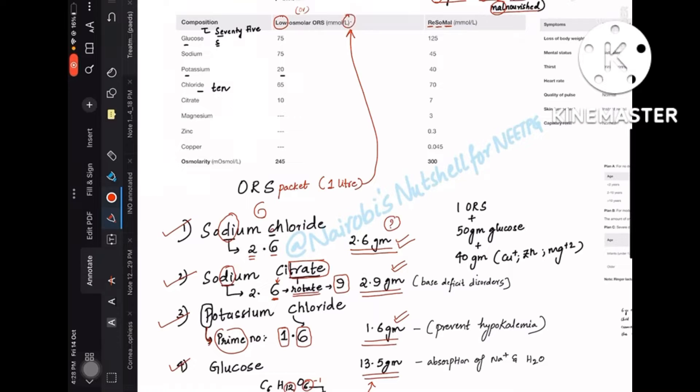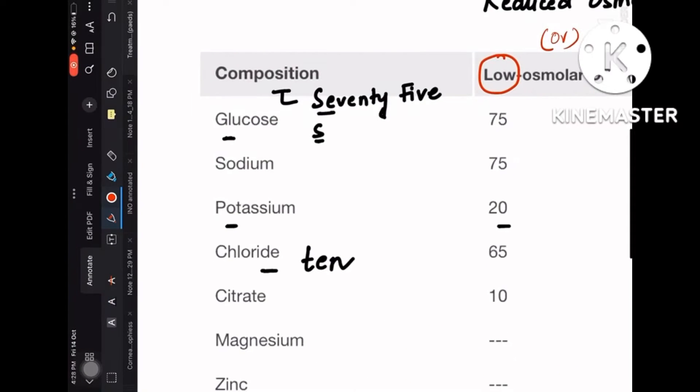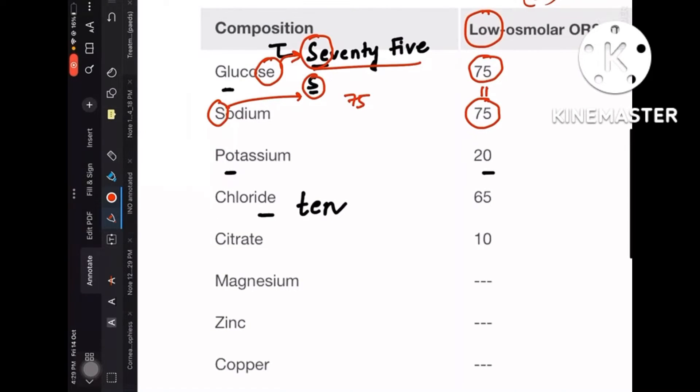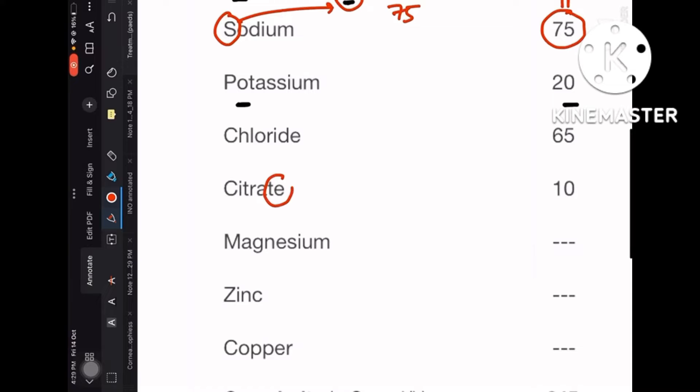Now let's understand or memorize what is the millimoles per liter value. Individually, glucose—glucose is having 'se,' so that is 75. And sodium is having first letter S, so that is again 75. Look at here: glucose and sodium are same, 75 and 75.